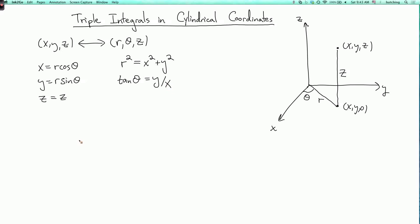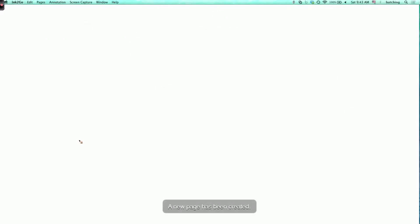So let's now think about how to integrate using cylindrical coordinates. Let's start a new page. So here's the kind of region we might want to integrate over. So in the xy plane, we have one of the polar regions that we've been integrating over before. Let's call this r.